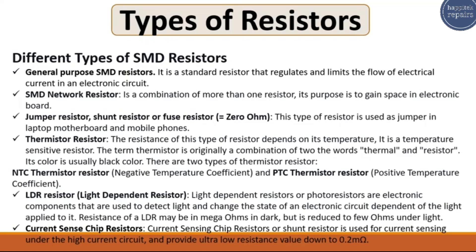The last resistor is the current sense chip resistor, also called a shunt resistor. It is used for current sensing in high-current circuits and provides ultra-low resistance values down to 0.2 milli-ohms.